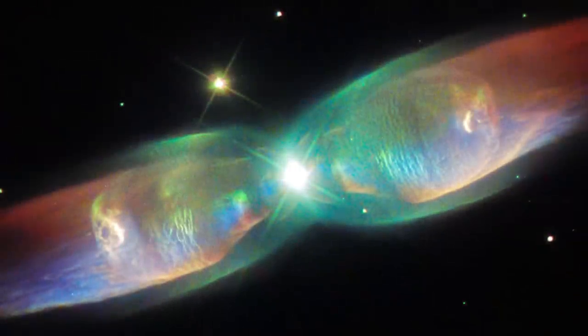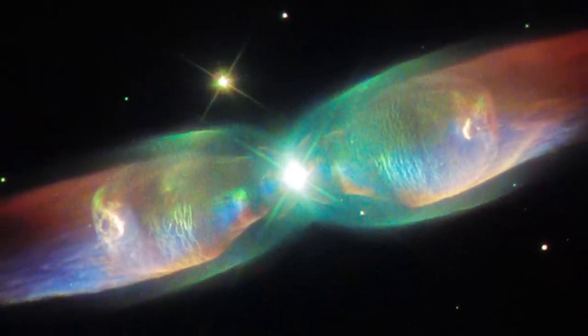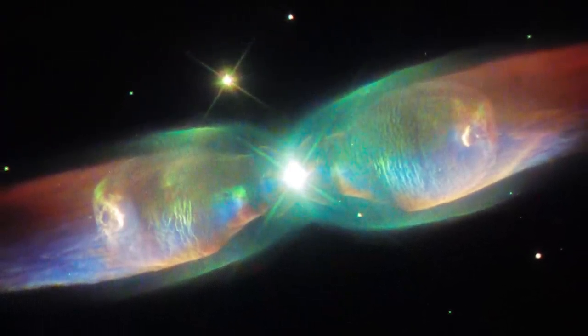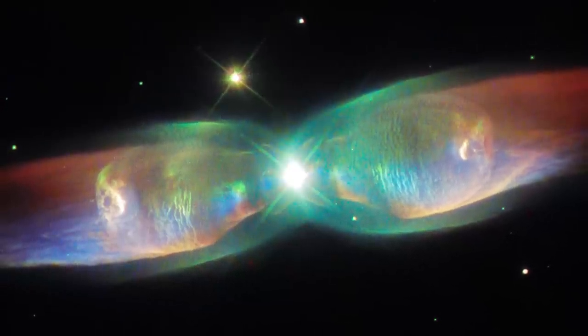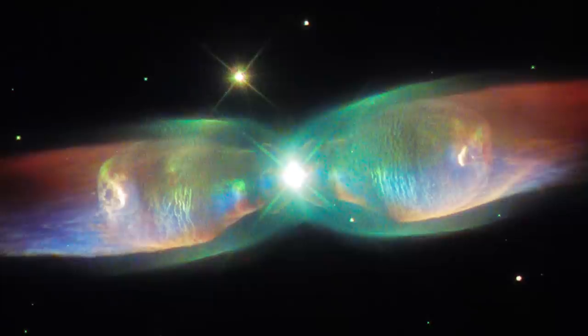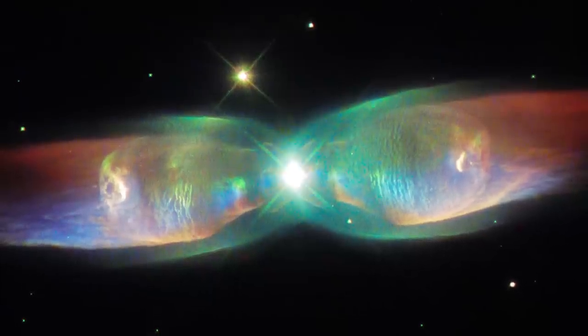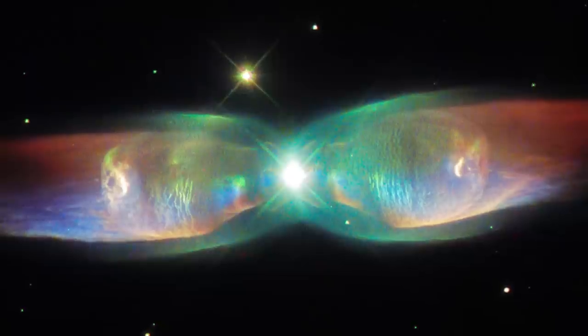These shells are then heated up, ionised and illuminated by the fierce ultraviolet radiation from the star's hot core, which remains at the nebula's heart, resulting in spectacular light shows like the one seen here.